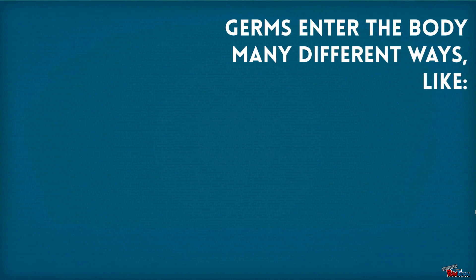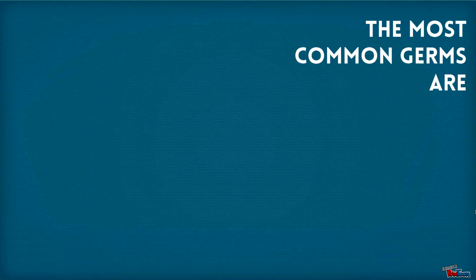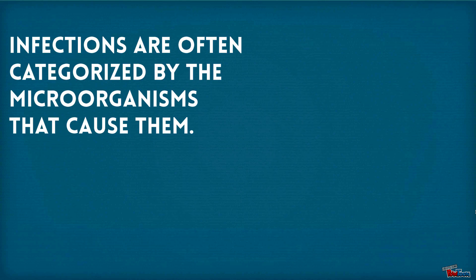Germs enter the body many different ways, like through blood or saliva, consumption of food or liquids, sexual activity, or breathing contaminated air. The most common germs are bacteria and viruses. Infections are often categorized by the microorganisms that cause them.